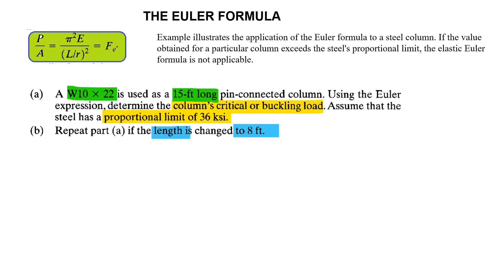Take a W10 by 22 section, 15 feet long, pin-connected column. Using the Euler expression, determine the column's critical or buckling load. Assume that the steel has a proportionality limit of 36 KSI. Repeat part A if the length is changed to 8 feet instead of 15 feet.